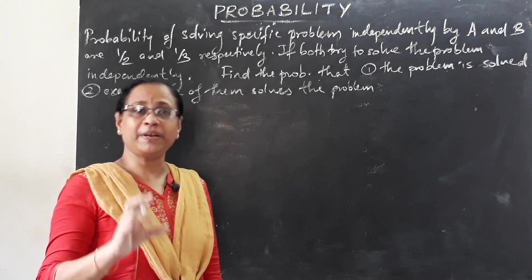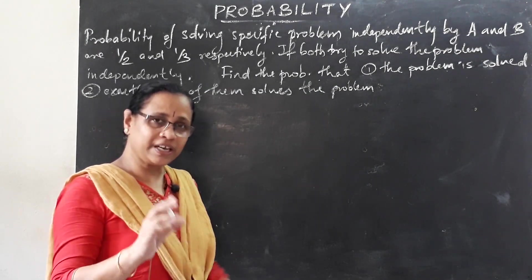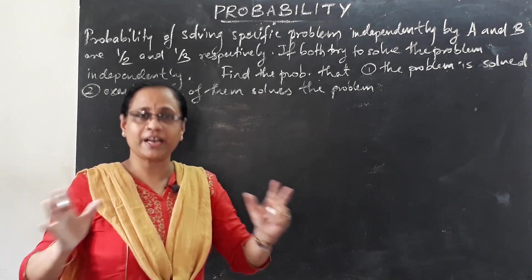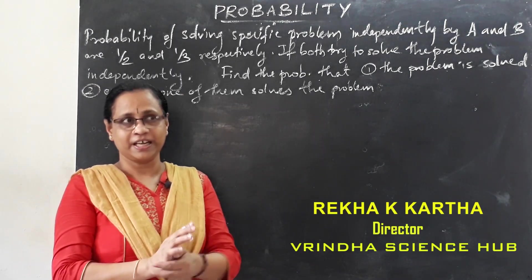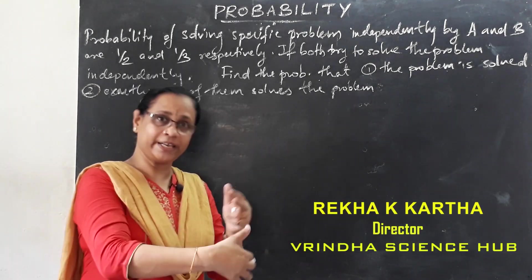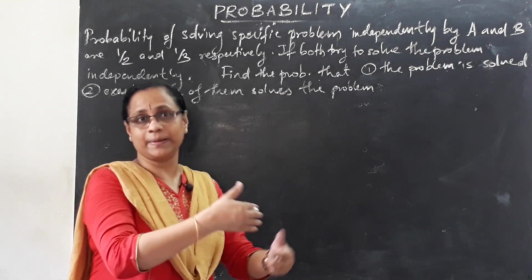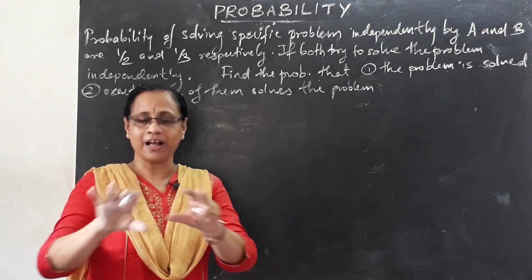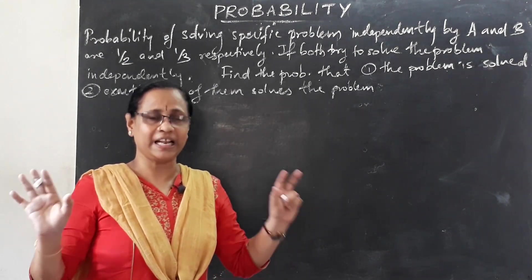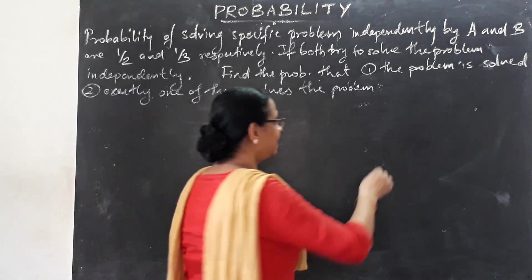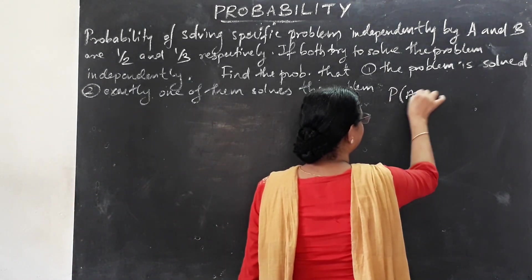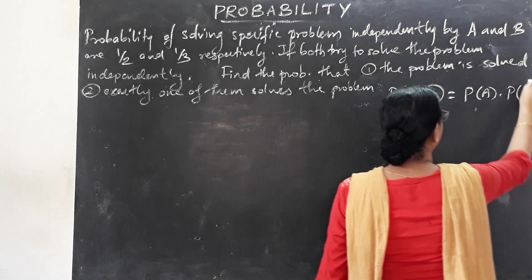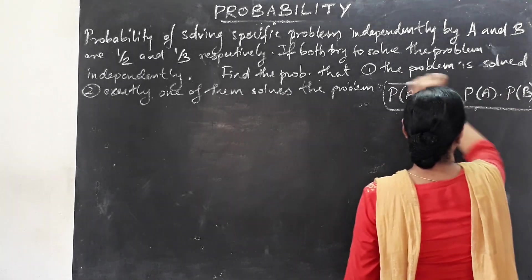This is the topic of independent events. For independent events, we deal with two independent probabilities — that is the conditional probability. Here, the key formula is: probability of A intersection B equals probability of A multiplied by probability of B. This defines independent events.